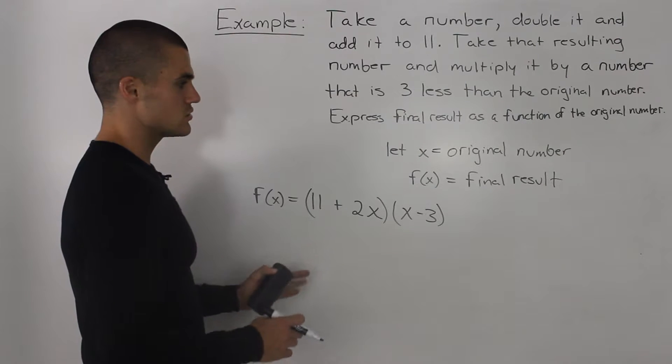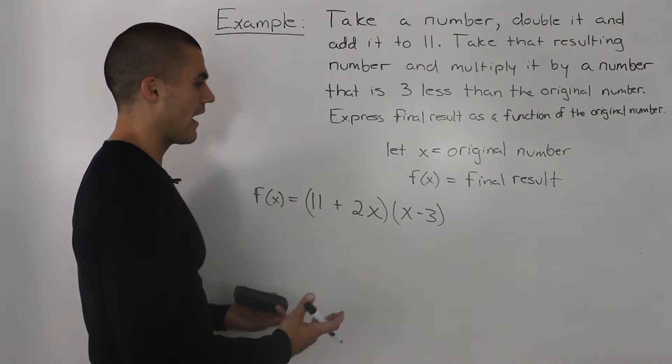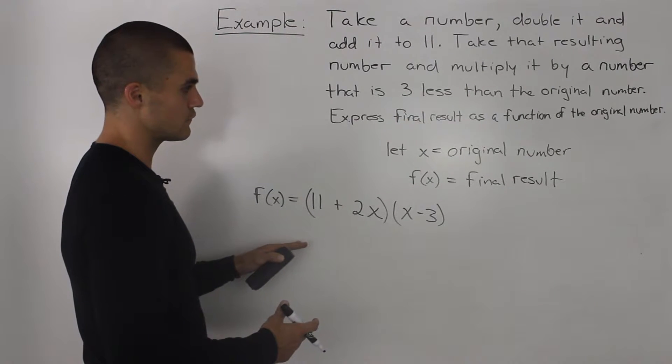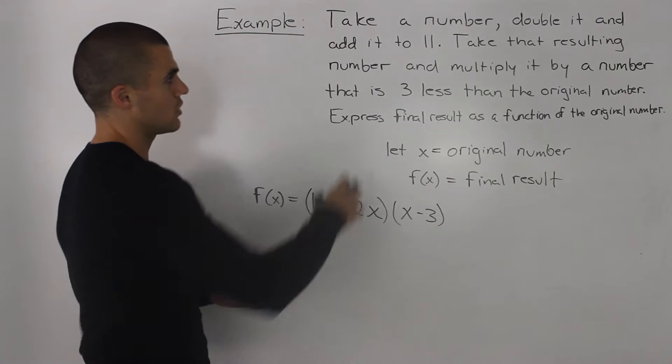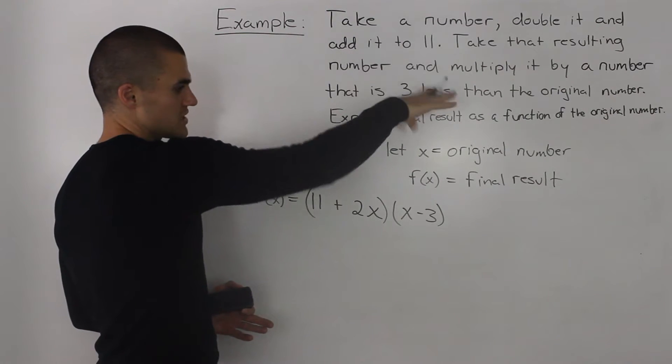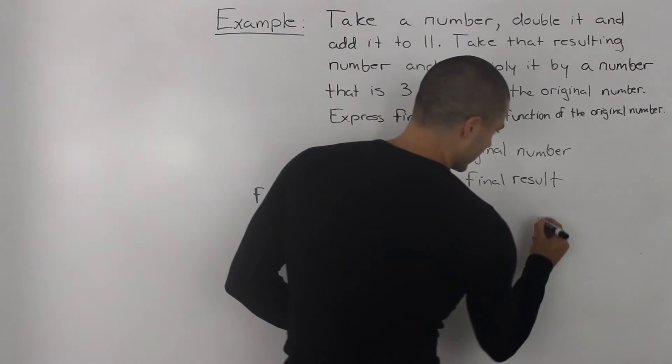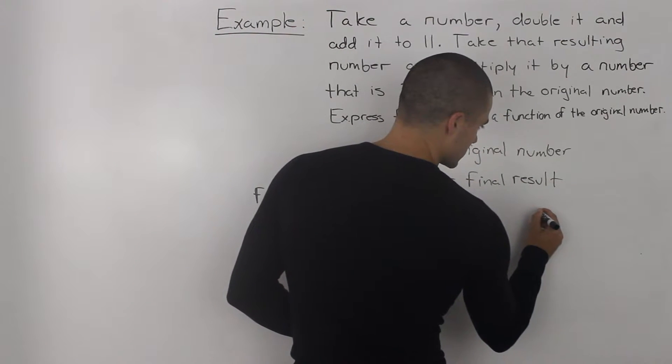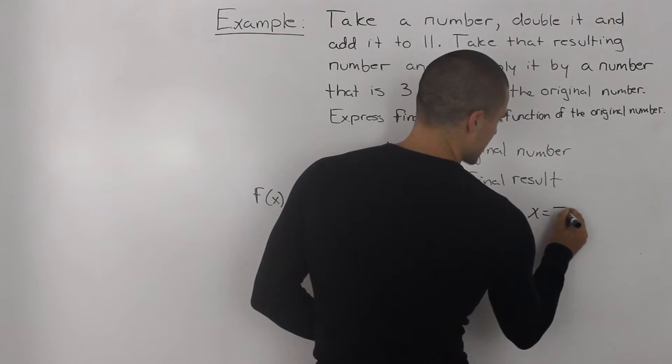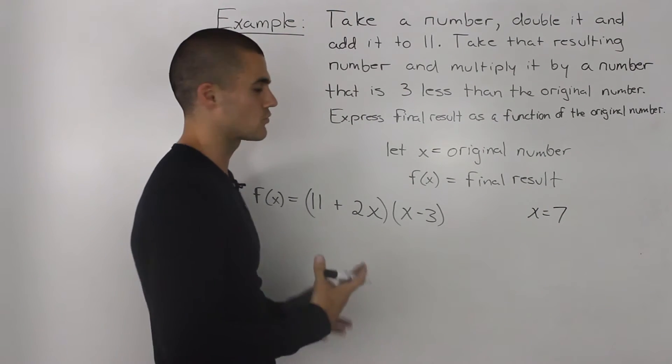So, to test this, you can pick any random value for x, and see if you can get the same result by going through the words intuitively, and then plugging it into the function. So, for example, let's say that we test it with a number 7. Alright, so that's our original number.